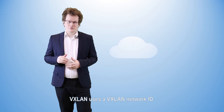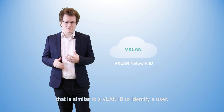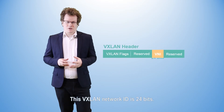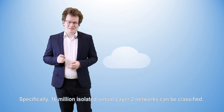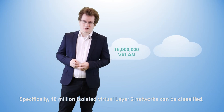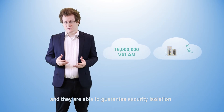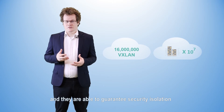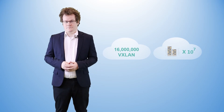VXLAN uses VXLAN network IDs to identify users, which are similar to VLAN IDs. A VXLAN network ID is 24 bits, which allows for 16 million isolated virtual layer 2 networks to be classified — a sufficient quantity to guarantee security isolation on large layer 2 networks.